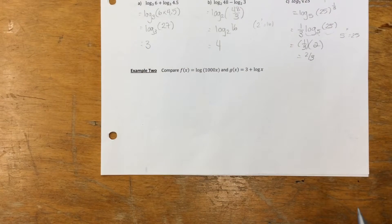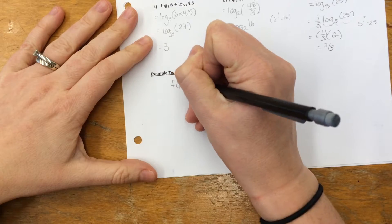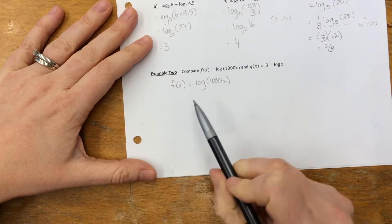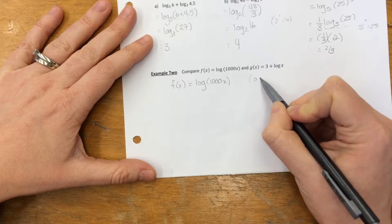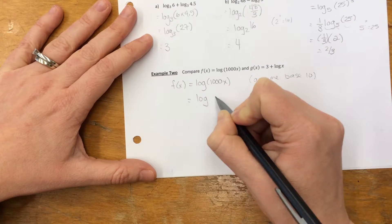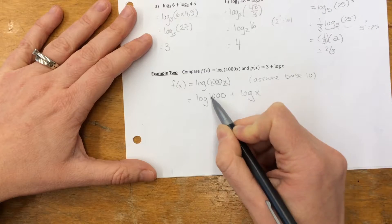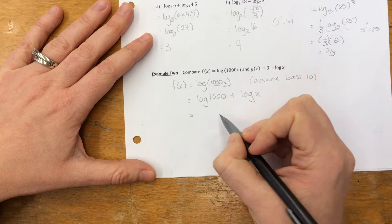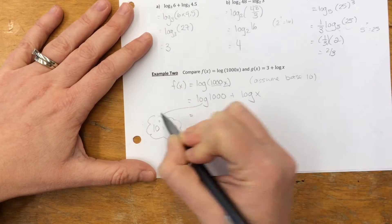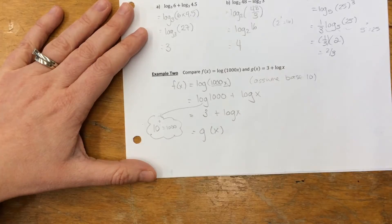In example 2, we compare log of 1000x and g at x equals 3 plus log x. I'll take log of 1000x and use my rules to rewrite it. Since no base is written, we assume base 10. The product law says we can change this into log of 1000 plus log of x. Log of 1000 is asking 10 to the power of what equals 1000 — that's just 3. So we get 3 plus log x, which is exactly g at x. So f at x and g at x are, in fact, equal.